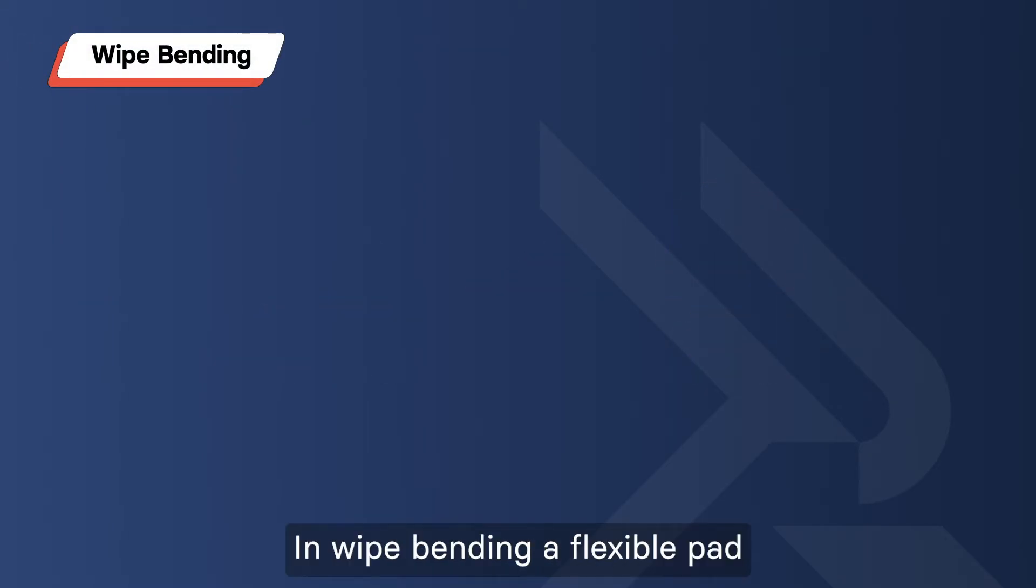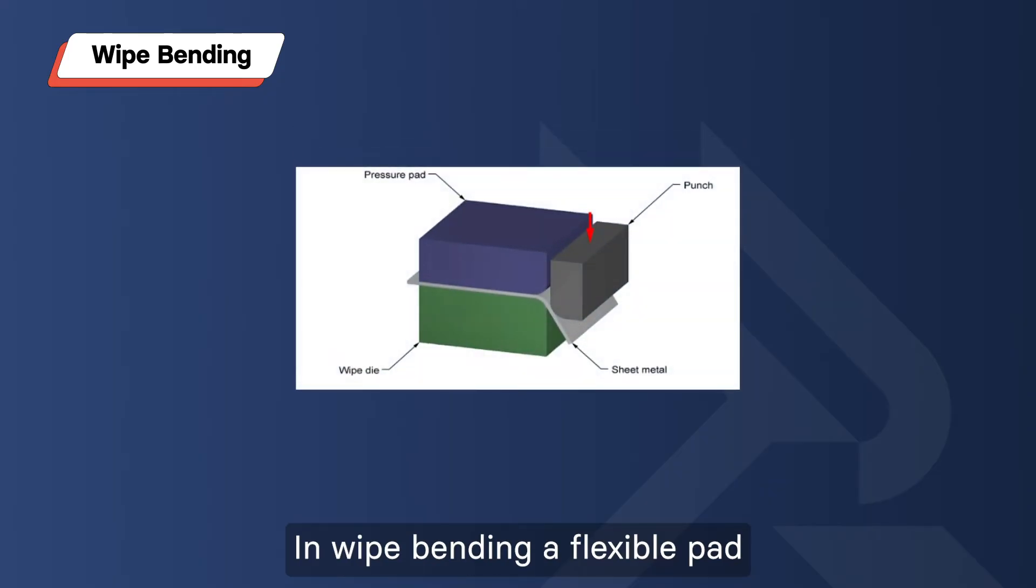Wipe Bending. In wipe bending, a flexible pad or wipe die is used to gradually bend the metal into shape, perfect for achieving smooth curves.